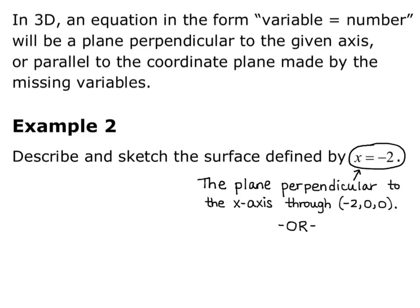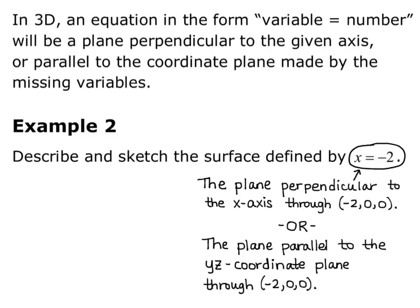Or, we can think of it as the plane parallel to the y-z coordinate plane through the point negative 2, 0, 0. Either way, it goes through the point negative 2, 0, 0 because x equals negative 2. If we're thinking of it as a perpendicular plane, it's perpendicular to the x-axis because x is the variable present. Or, think of it as parallel to the y-z coordinate plane because y and z are the variables not present.